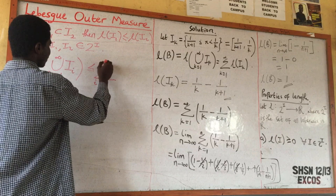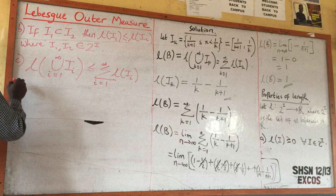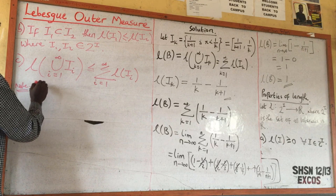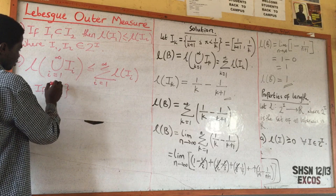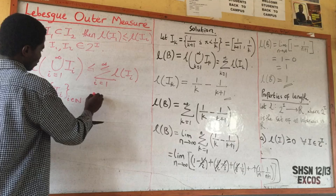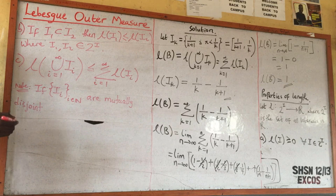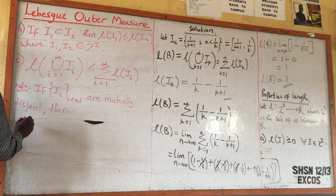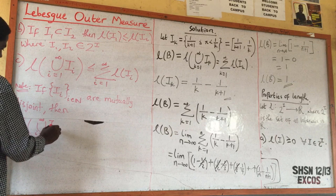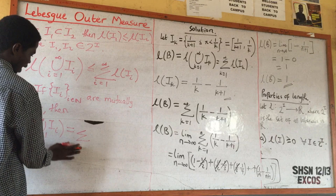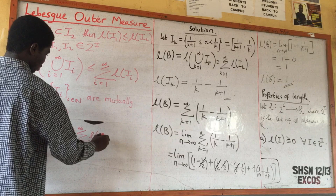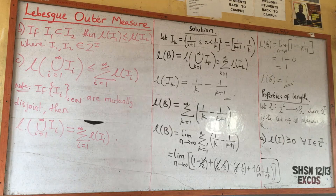The third property is: the length of the union of I_k from k=1 to infinity is always less than or equal to the summation of k from 1 to infinity of the length of I_k. However, if the I_k's are mutually disjoint, then the inequality becomes equality: the length of the union equals the summation of the lengths.